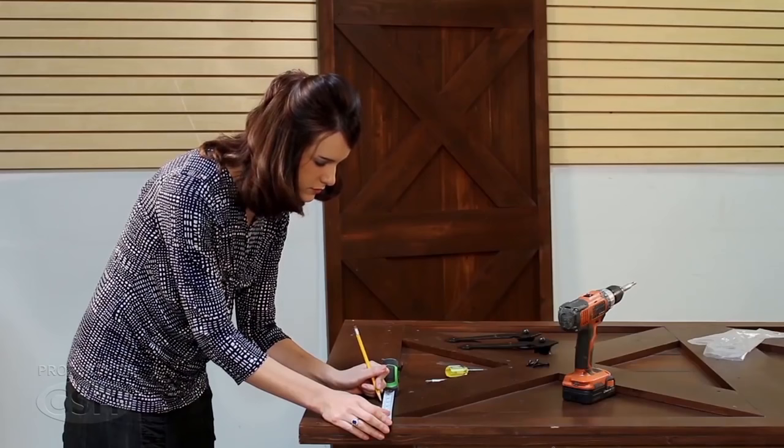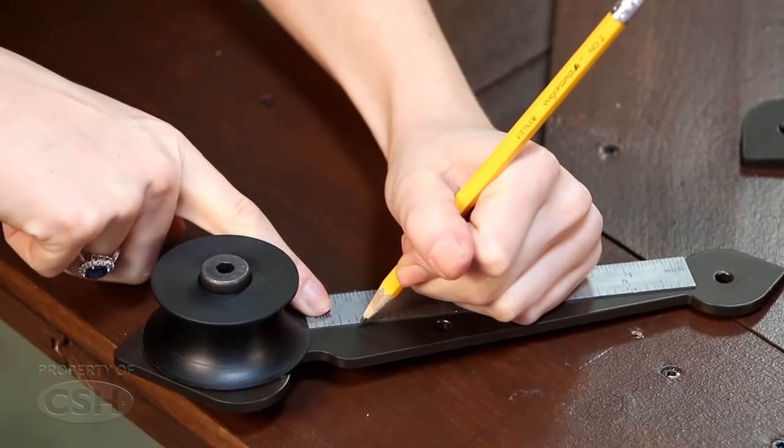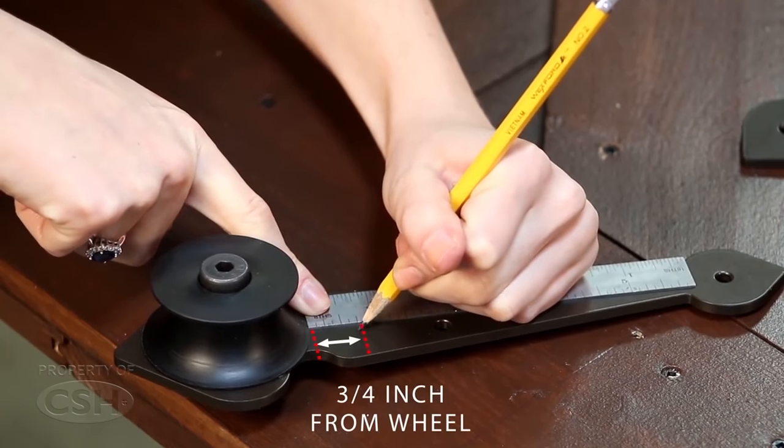Determine where the roller straps will be located on the door. On the back of the roller strap, measure down ¾ inch from the outside diameter of the roller.